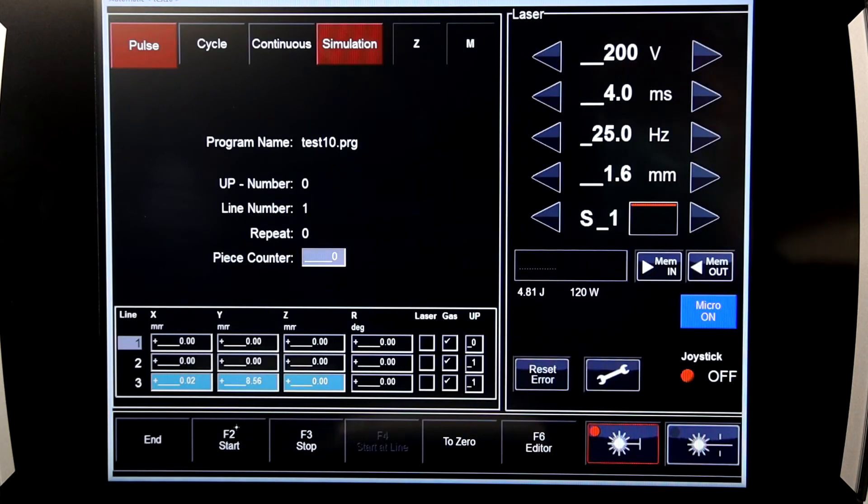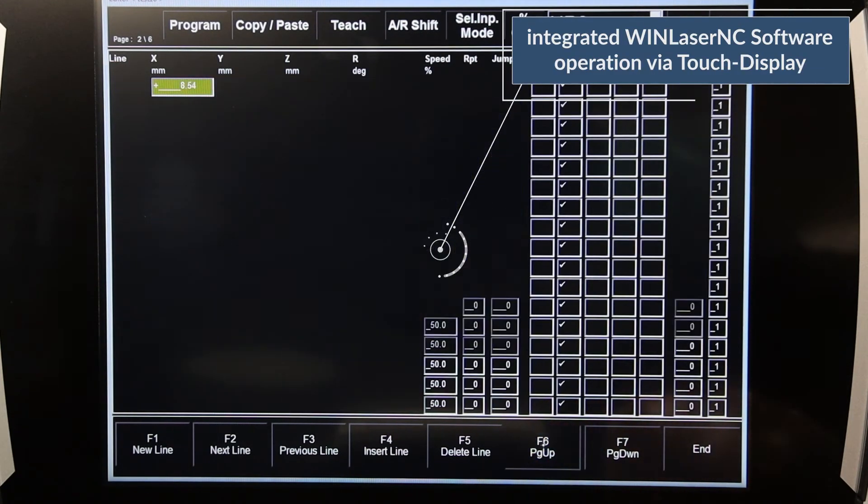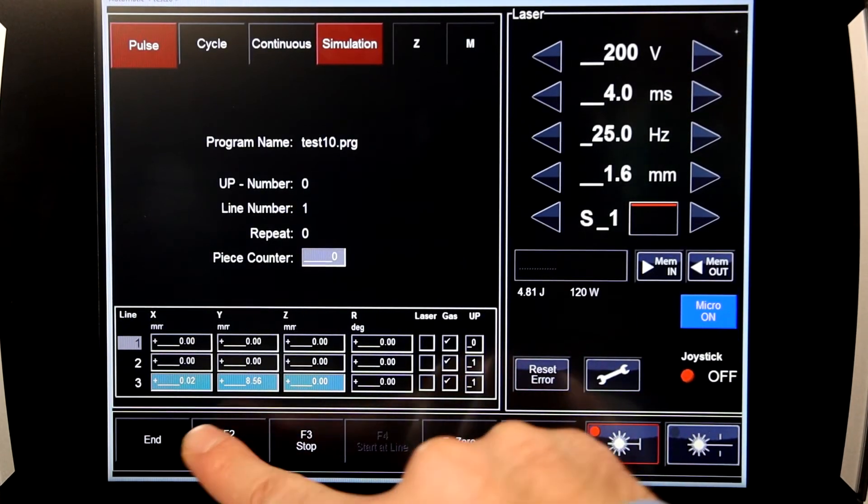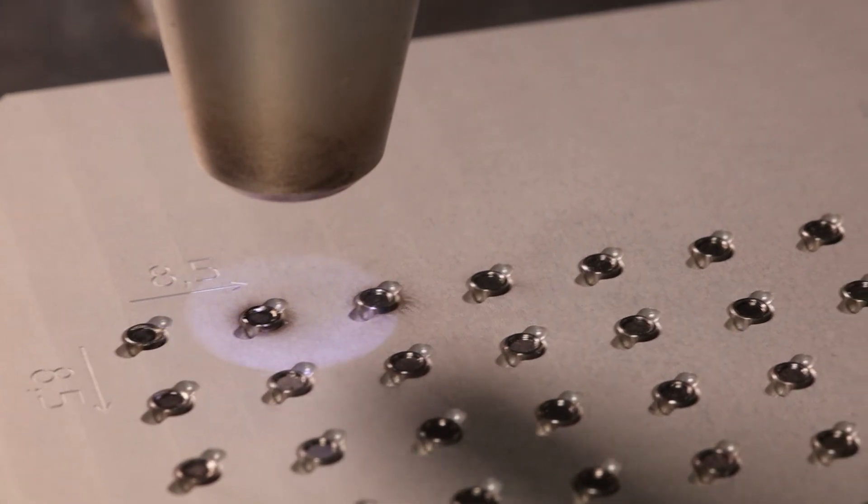For further automation, we recommend the ALV with the wind laser NC control. This software enables interpolated travel in X, Y and Z, and the processing of magazines with several components.